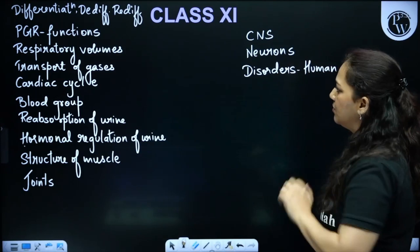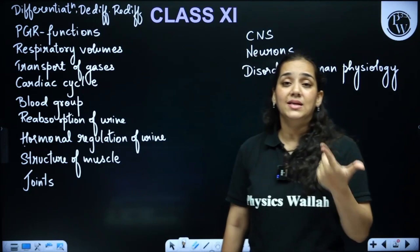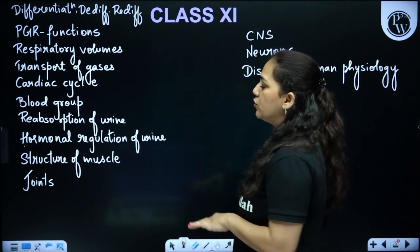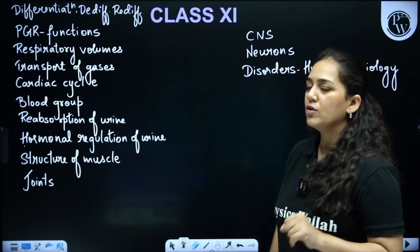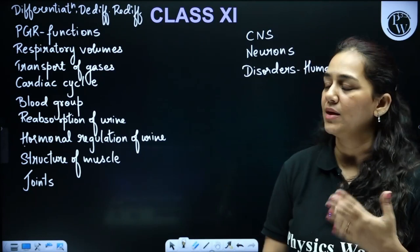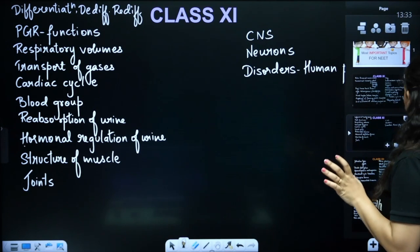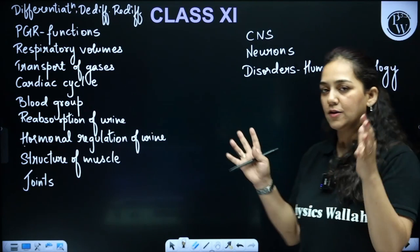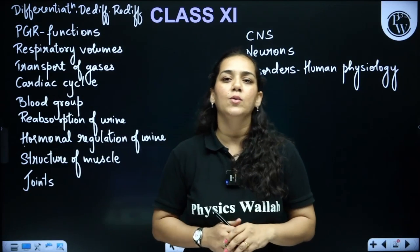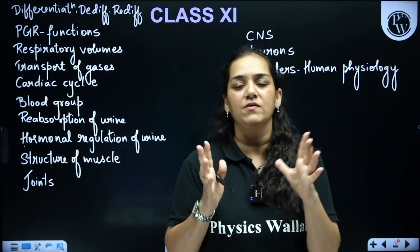In Human Physiology, respiratory volumes are frequently asked, as is the transport of gases. The cardiac cycle, blood grouping with antigen-antibody mechanisms, reabsorption of urine, and hormonal regulation of urine are important. The structure of muscle and different types of joints have been asked in the last five years, as have the central nervous system, neurons, and all disorders from human physiology chapters — compiling a comprehensive list of disorders with causes and symptoms is very helpful.